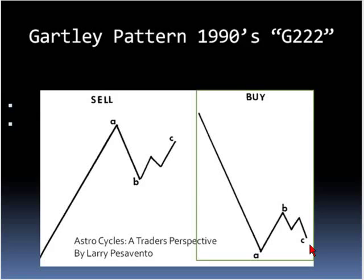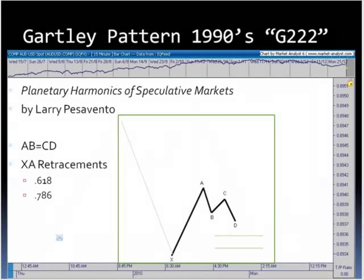The next book Larry published was Planetary Harmonics of Speculative Markets. Now the labels are a little different. Notice the piece that's missing: the downward trend that precedes the pattern is now removed. We're simply looking at one leg — the XA move — then AB, BC, and CD. So we have new labels, more of an abbreviation of the original pattern. Larry is now starting to apply Fibonacci ratios, specifically the 0.618 and the 0.786 Fibonacci retracement, calculated based on the XA move.